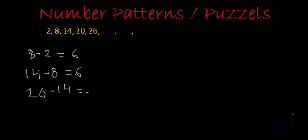So let's find the difference between two consecutive terms. 8 minus 2 is 6. 14 minus 8, this is also 6. And 20 minus 14, this also gives us 6. Similarly, 26 minus 20, this also gives us 6.